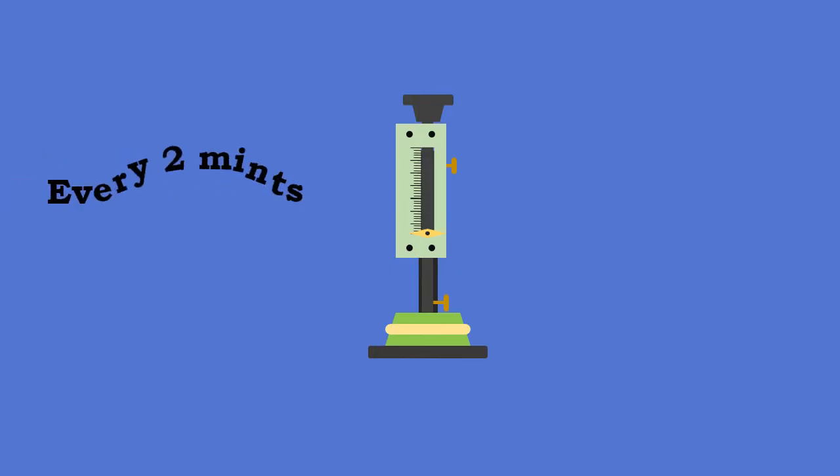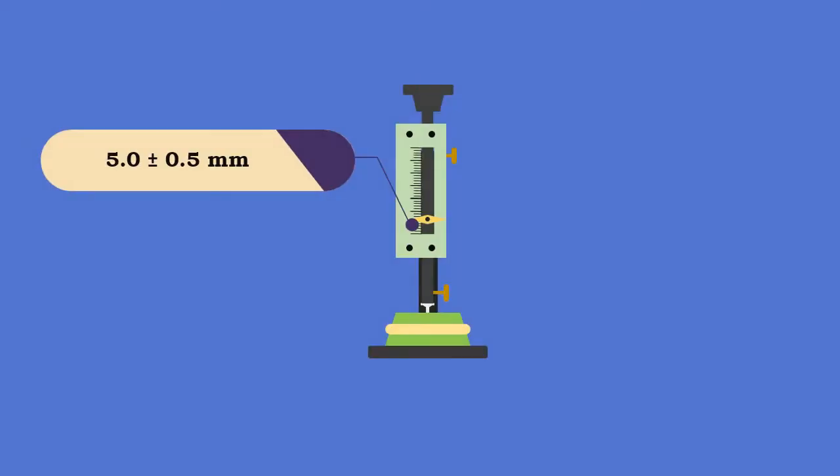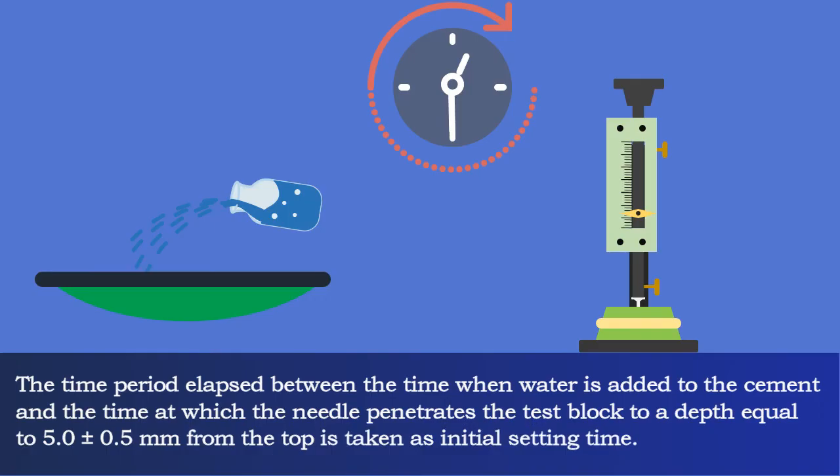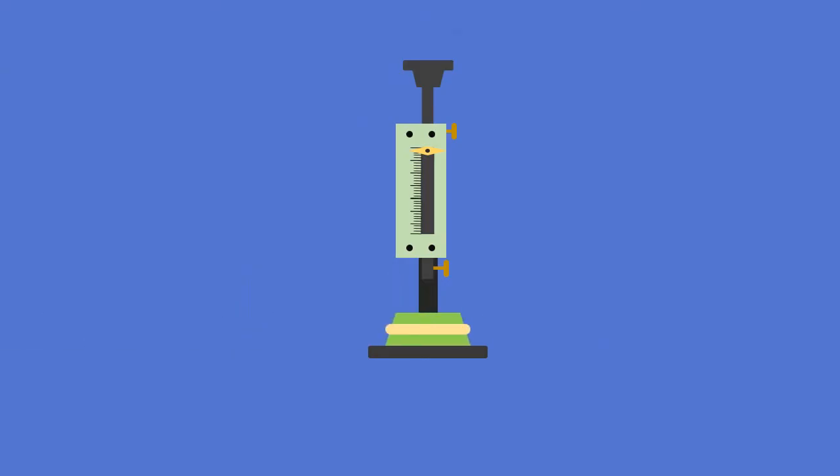Repeat the test every 2 minutes until it fails to pierce the block beyond 5.0 ± 0.5 millimeters measured from the bottom of the mold. The time period elapsed between when water is added to the cement and when the needle penetrates the test block to a depth equal to 5.0 ± 0.5 millimeters from the top is taken as initial setting time.